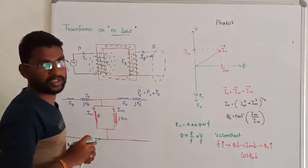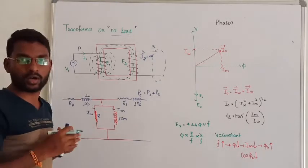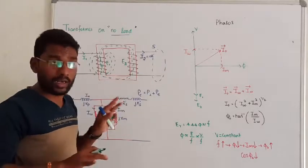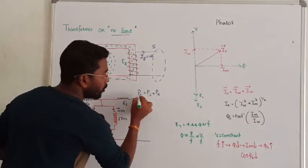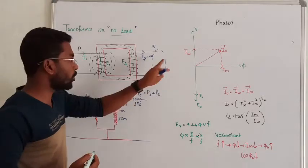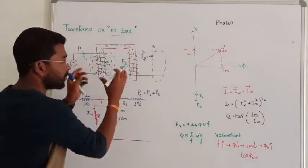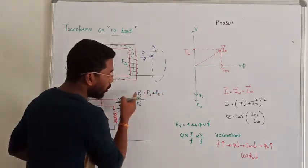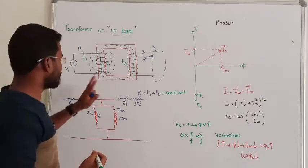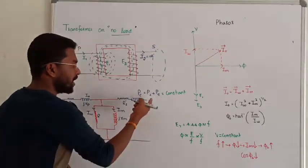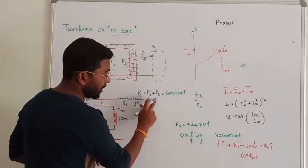Since there is no load on the secondary side, the secondary current is 0. The losses in the transformer core — called core losses — include hysteresis losses and eddy current losses.